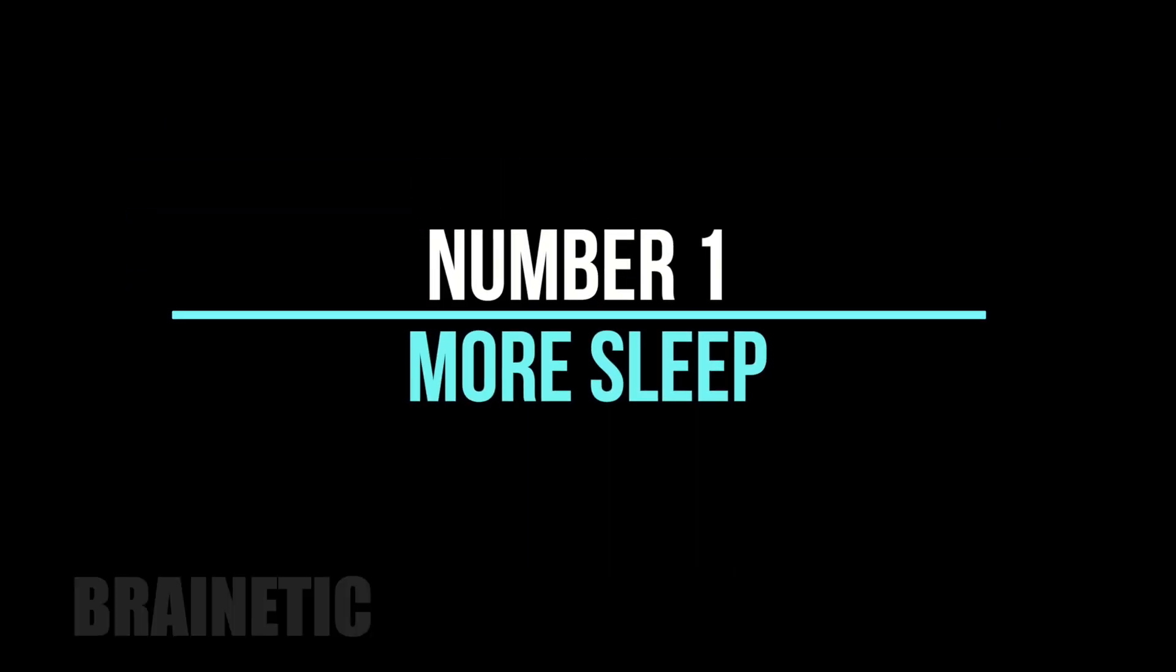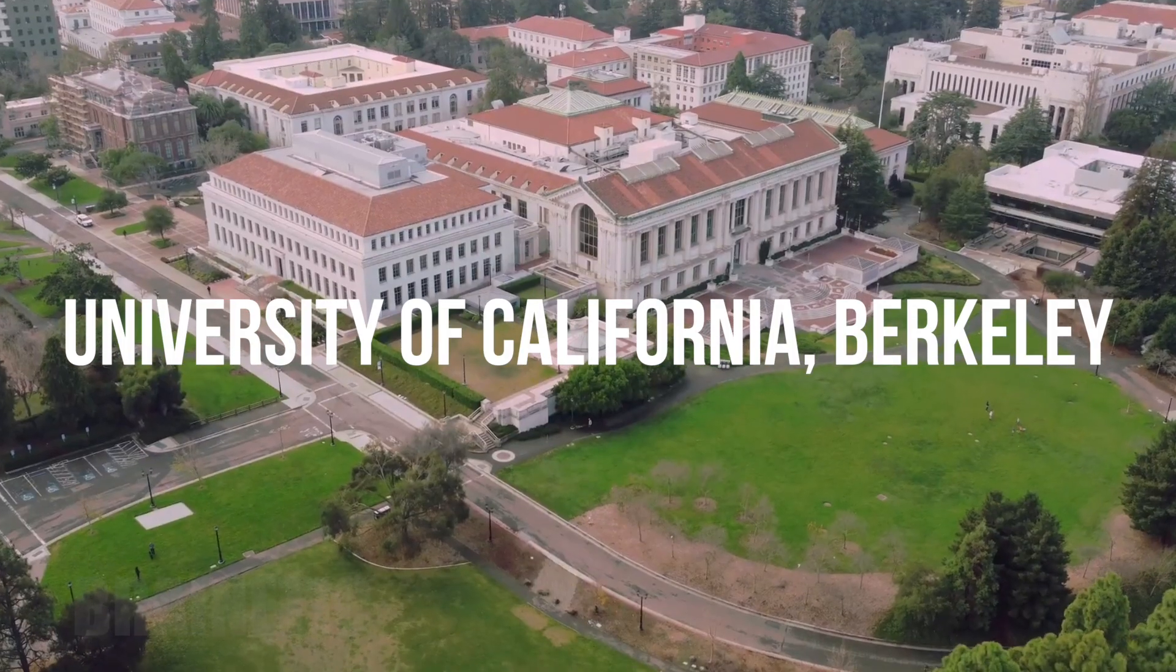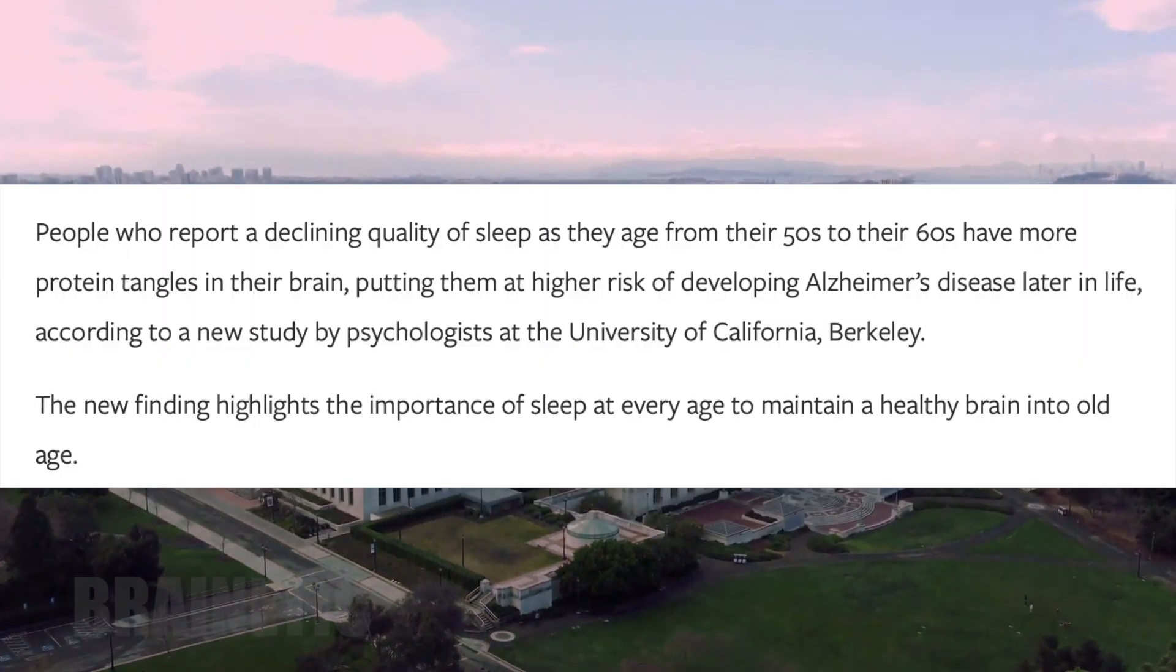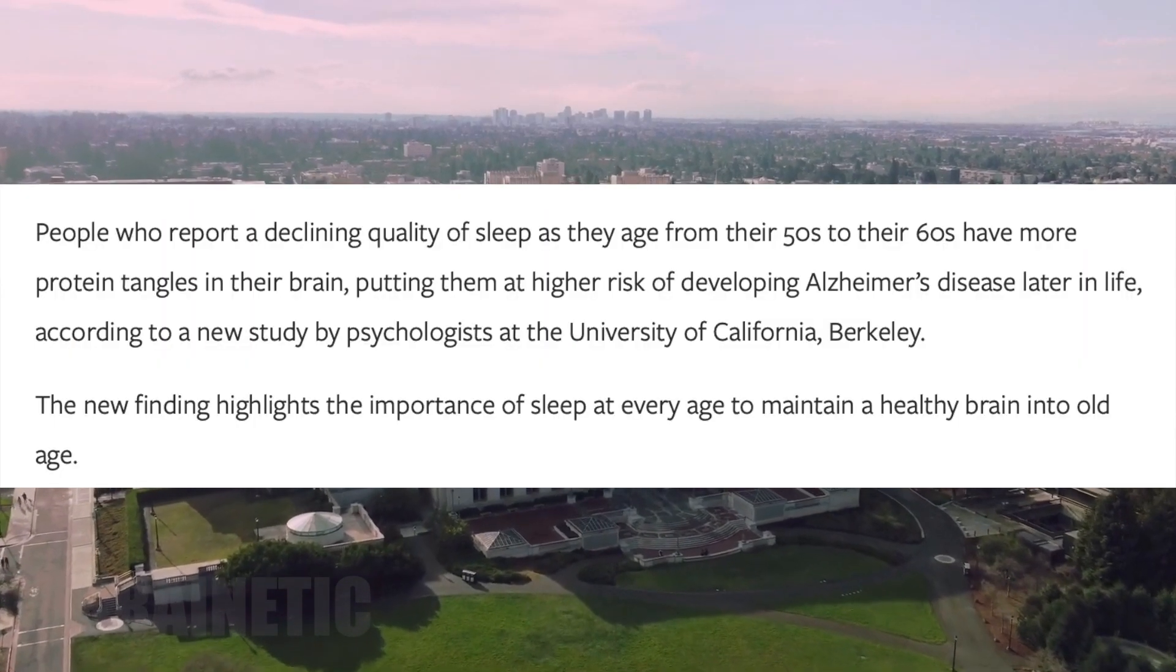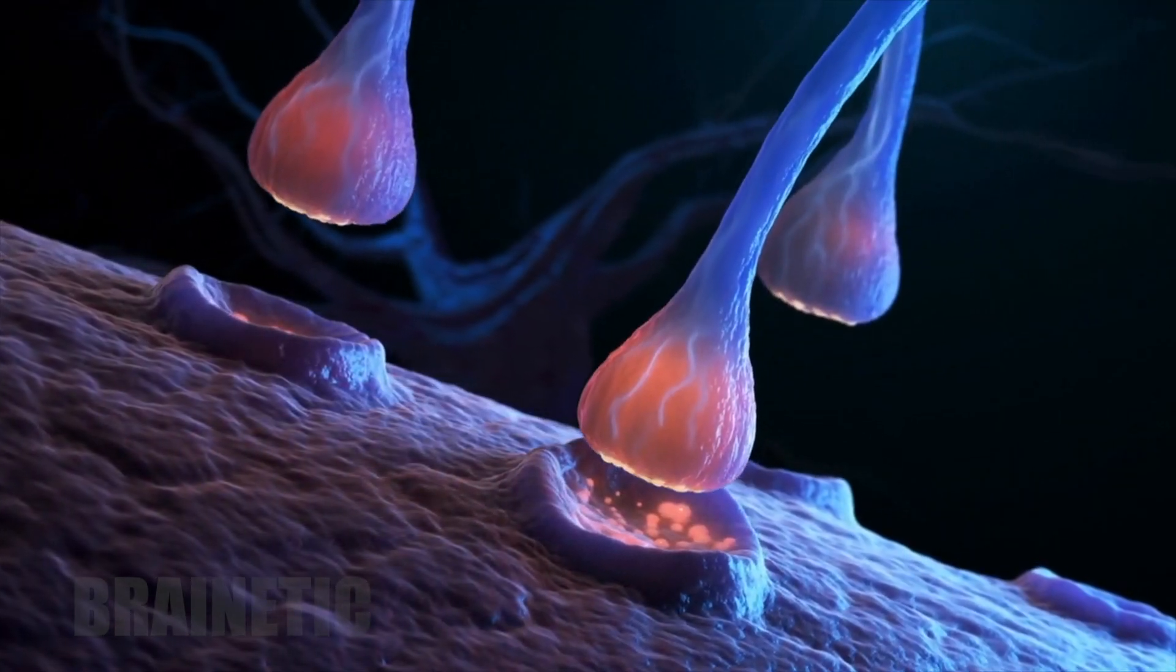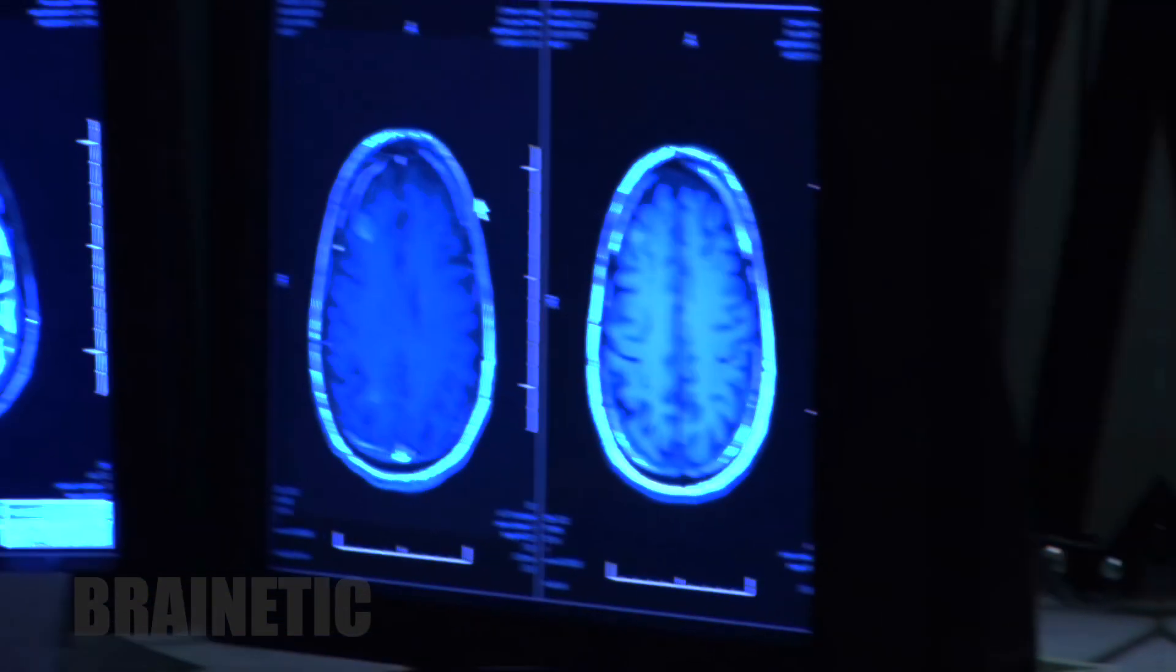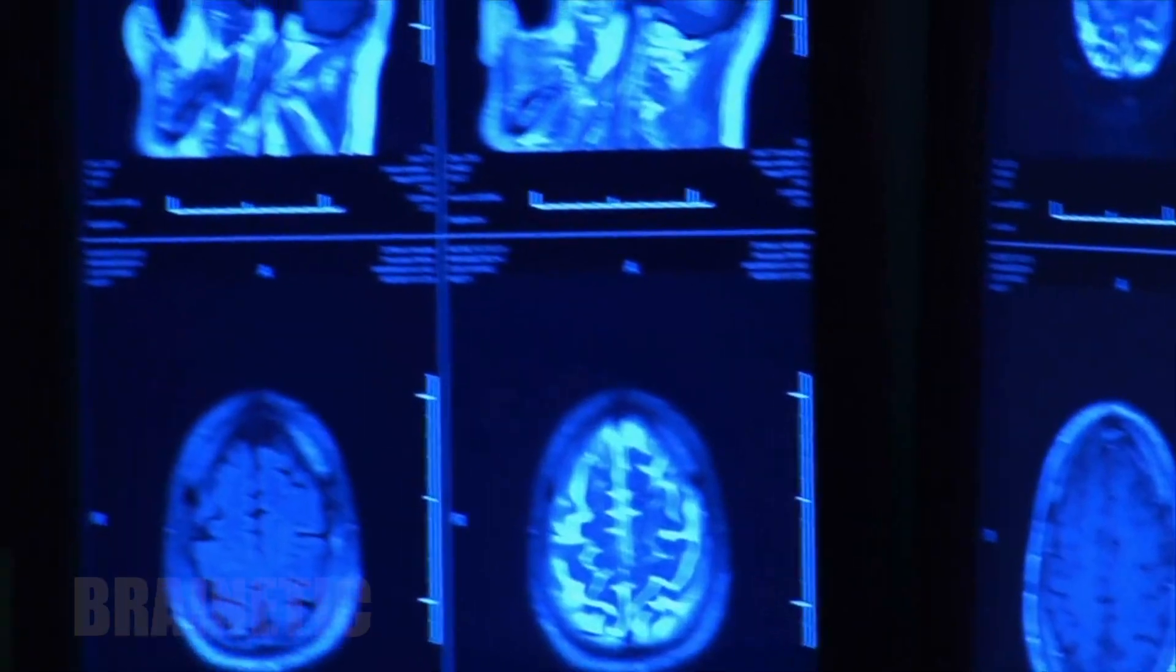Number 1. More sleep. Chronic sleep deprivation impairs memory. Scientists at the University of California, Berkeley, have discovered solid evidence that a lack of sleep might impair memory and induce Alzheimer's disease. Brain cells remove poisonous chemicals that are harmful to our brain after a full night's sleep. If a person does not receive enough sleep, it has a negative impact on their brain cells.